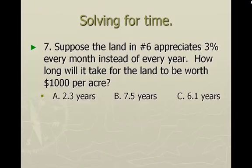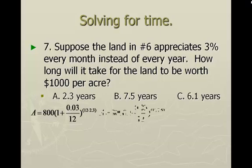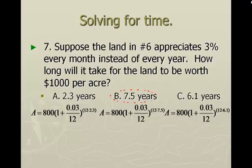In this last example, we're still using the information from number six, but we want to compound interest every month instead of every year. This time, N is 12, standing for 12 times a year. So: 800 times the quantity 1 plus 0.03 over 12, to the power of 12 times each answer choice — 2.3, 7.5, or 6.1 years. Figure out which one gets you closest to $1,000. B, 7.5 years, is the correct answer.